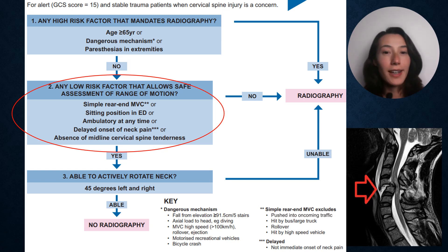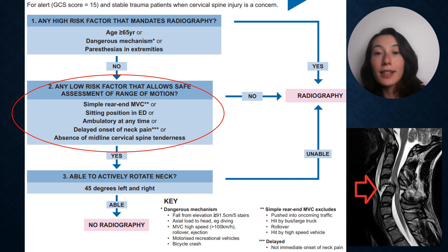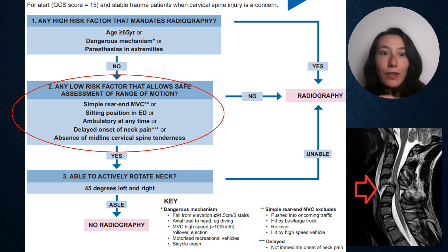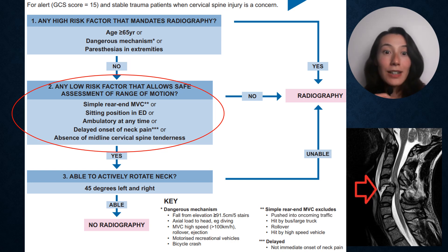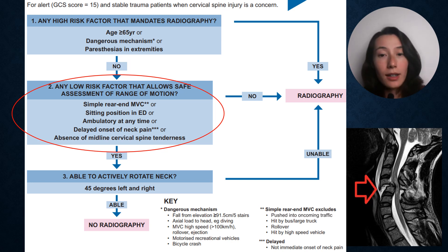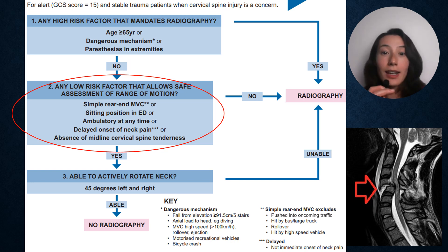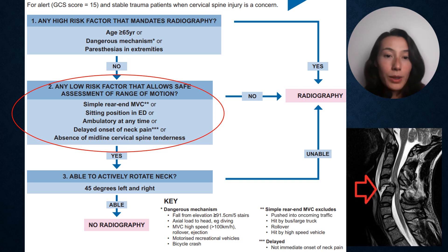Moving down the chart: ambulatory at any time means the person is able to move and walk after the injury. It's similar to the concept of being able to sit, but walking is even more demanding because of all the shock experienced with every step. If a person has an intense fracture, they probably could not withstand walking. The inability to walk could also be due to nerve compression — the nerve is so compressed you physically cannot walk. So if a person cannot walk following the incident, tell them to get an x-ray. But if they can, you can try ranging them.